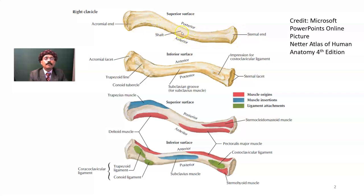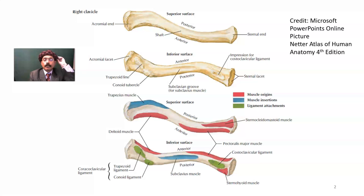This is the shaft of the clavicle — it is a long bone with two ends and one shaft. This is the superior surface. The inferior surface is demarcated by the groove for the subclavius muscle attachment. The margin gets attachment of the clavipectoral fascia. Here we have the conoid tubercle for articulation with the conoid part of the coracoclavicular ligament, and the trapezoid line for articulation with the trapezoid part of the coracoclavicular ligament.